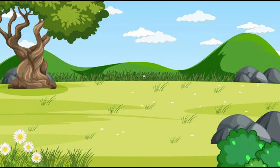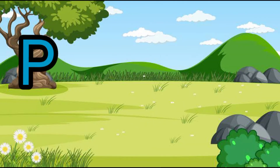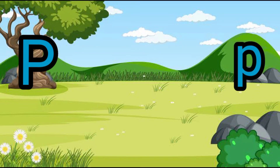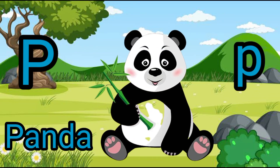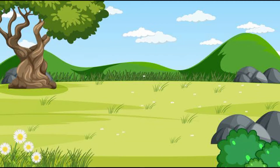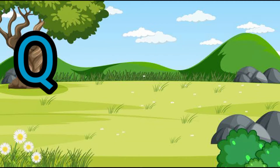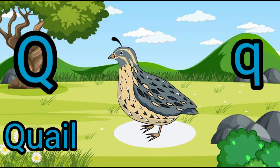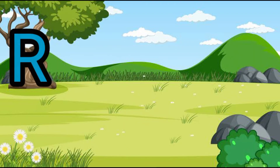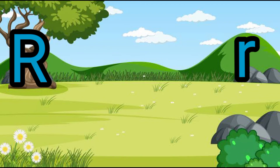P — P is for Panda. Q — Q is for Quail. R — R is for Rabbit.